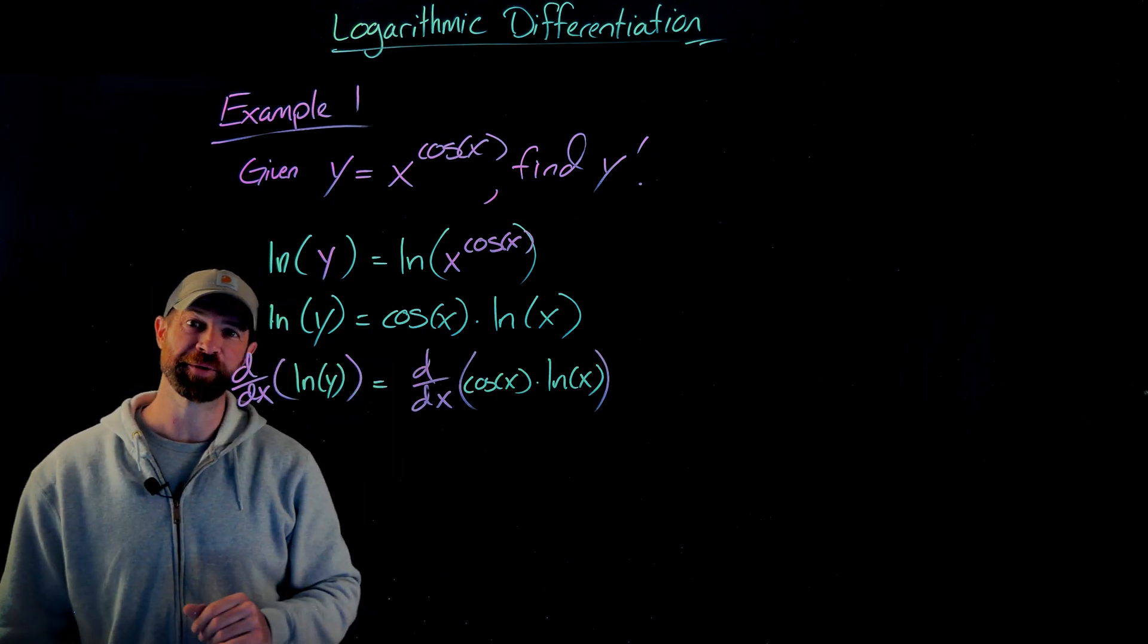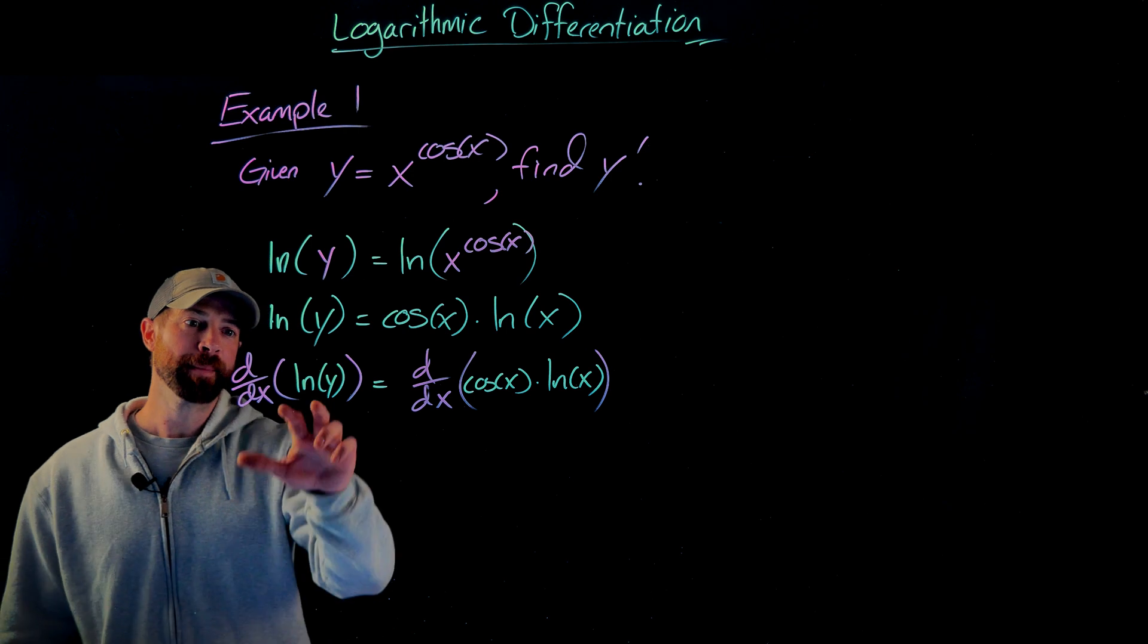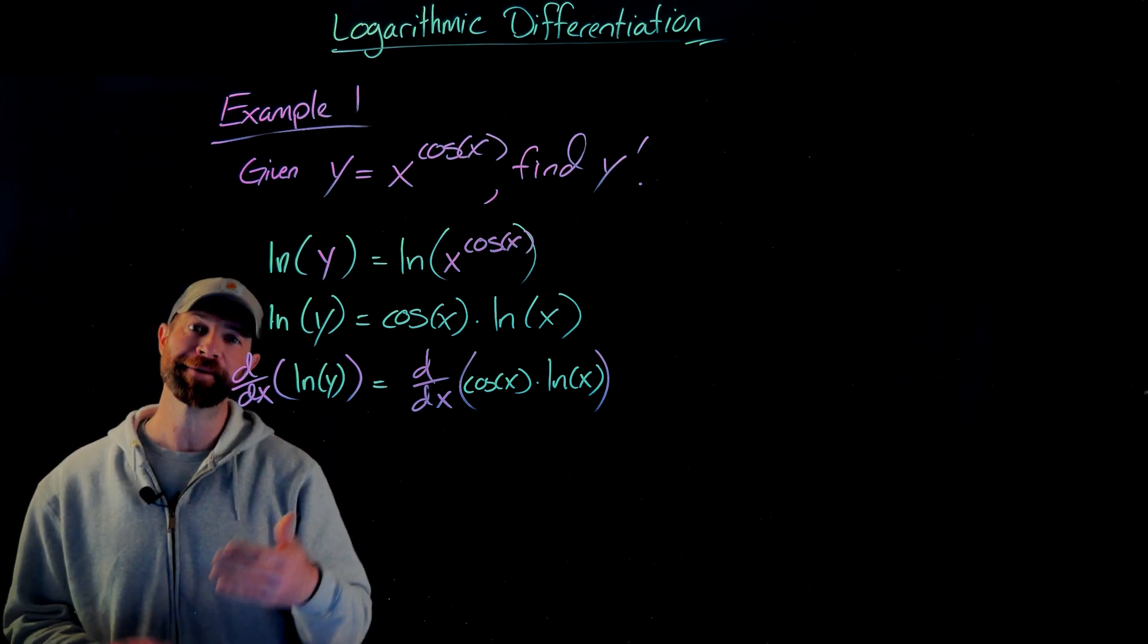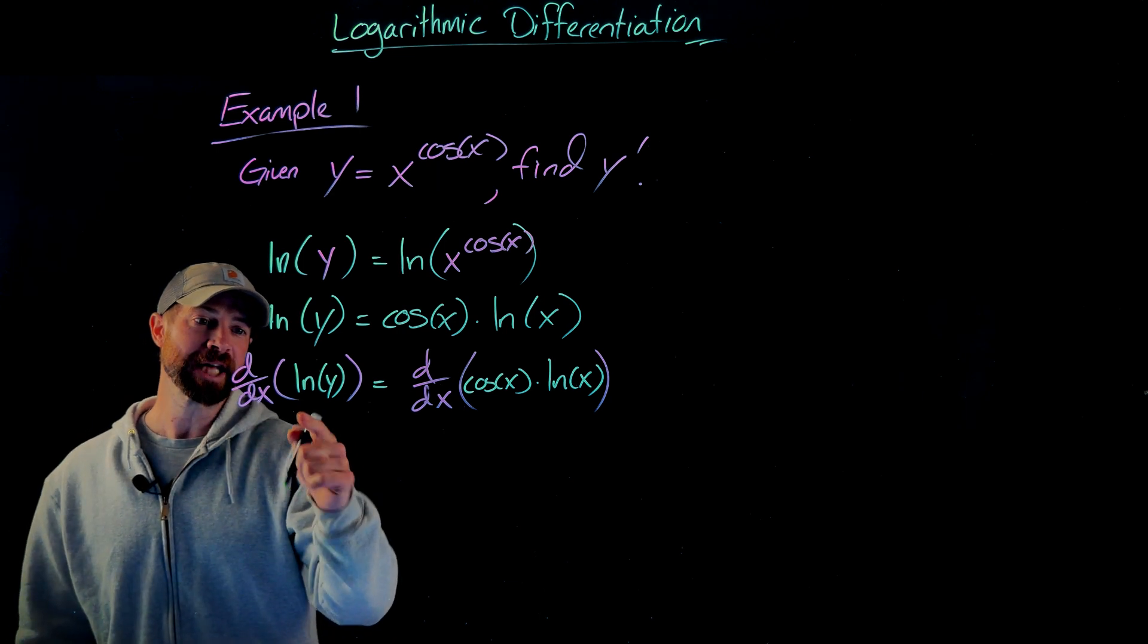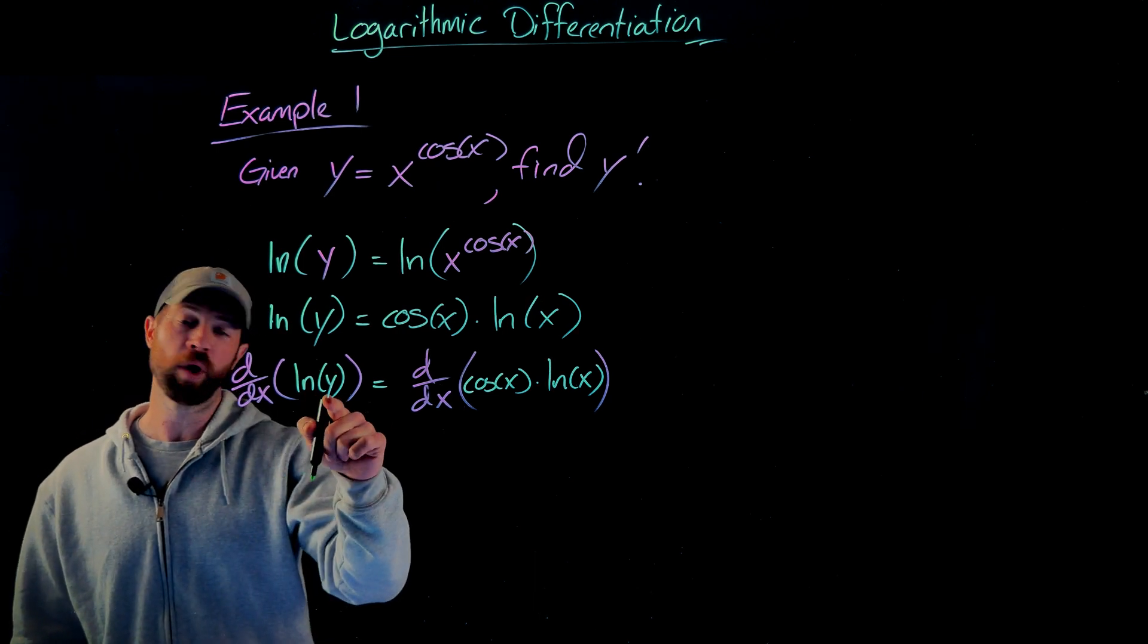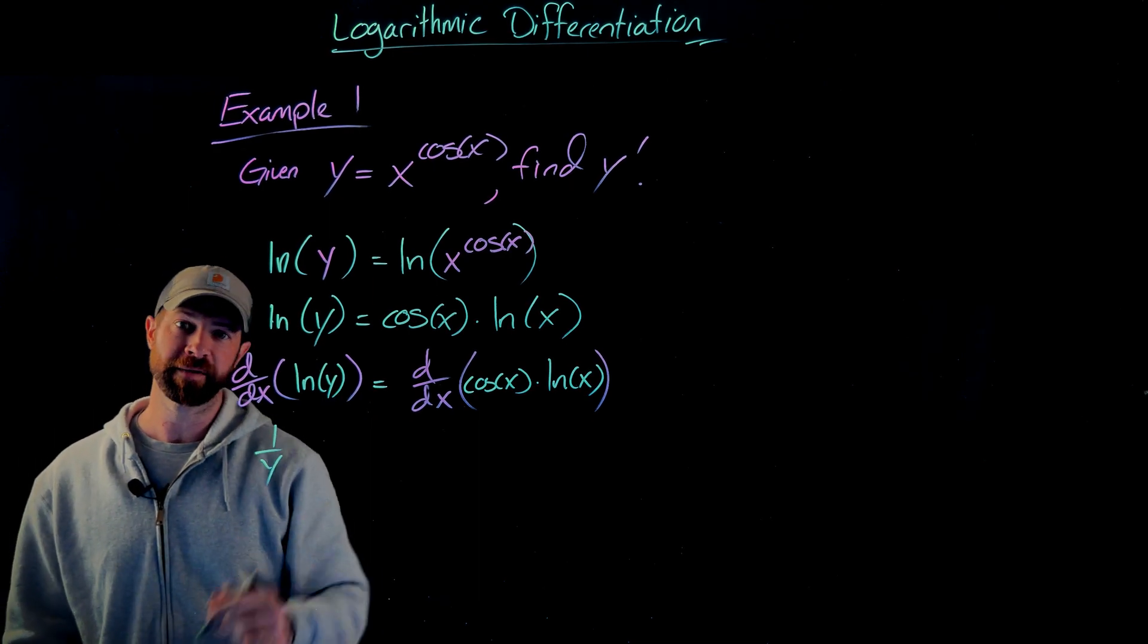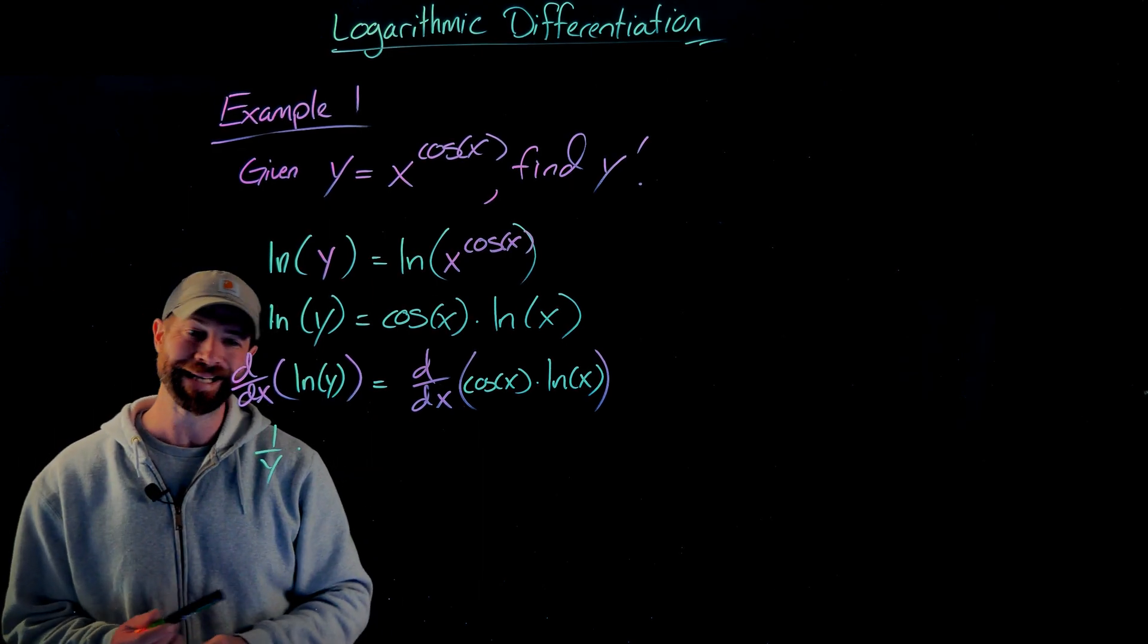Okay, now I apply the derivative with respect to x to both sides. Here, the natural log of y, I'm going to need to use the chain rule on this. Y is a function of x. So the first step would be 1 over x, or in this case 1 over y, because it's my inside function. Then I'm going to multiply by the derivative of y, which is simply dy dx.